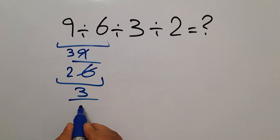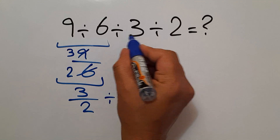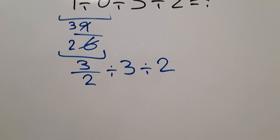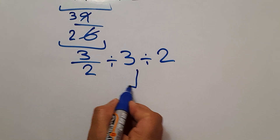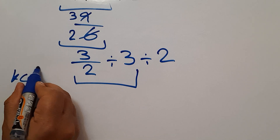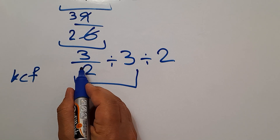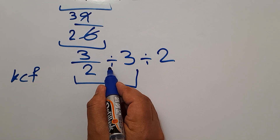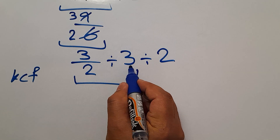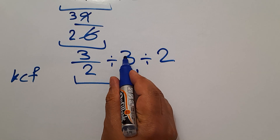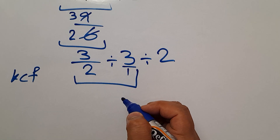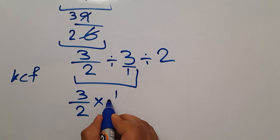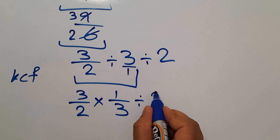Then we have 3 divided by 2, then divided by 3, and divided by 2. According to the KCF rule, we first keep this fraction, change division to multiplication, and then flip the second fraction. Our second fraction is 3 over 1, so we get 3 divided by 2 times 1 over 3, then divided by 2.